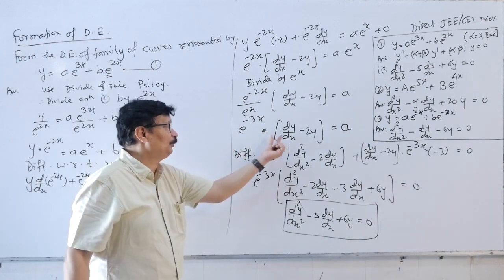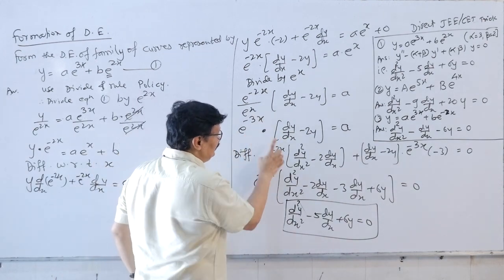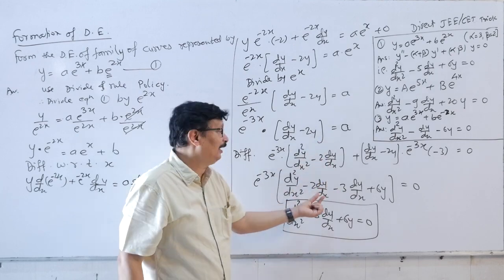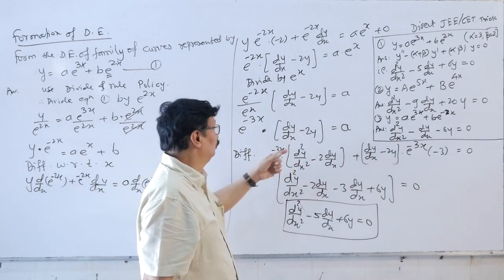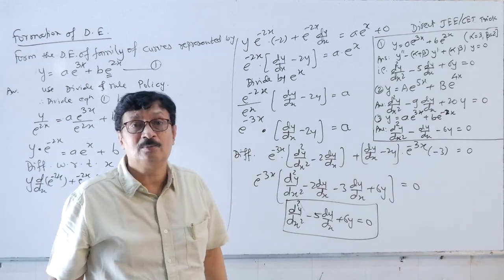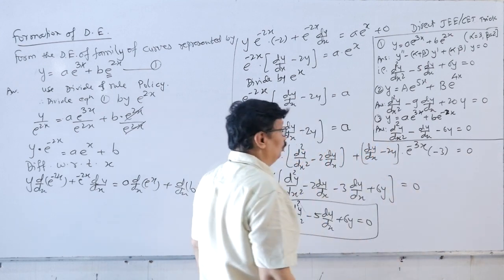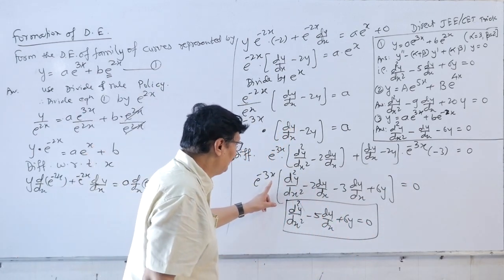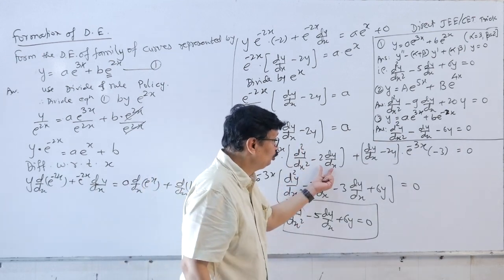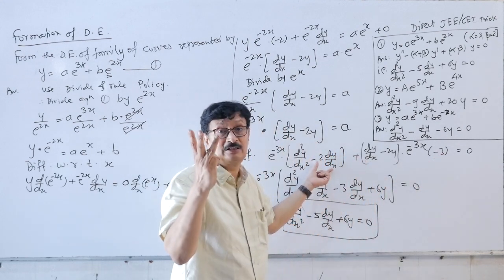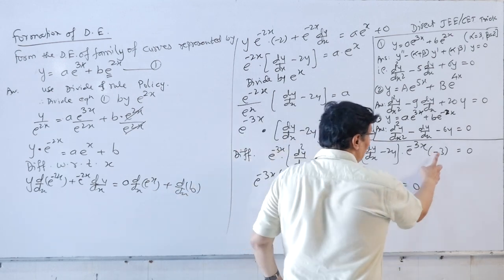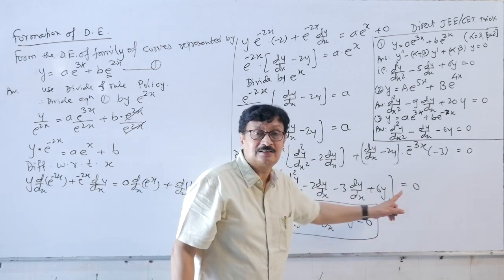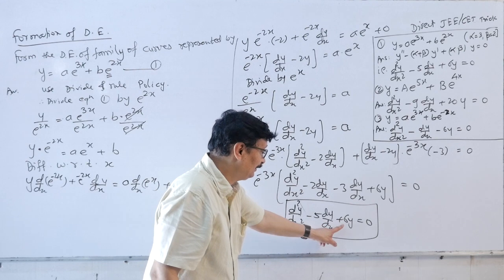Differentiating e^(−3x)·[dy/dx − 2y] = a with respect to x using the product rule: e^(−3x)·[d²y/dx² − 2·(dy/dx)] + (dy/dx − 2y)·e^(−3x)·(−3) = 0. After simplification and cancelling e^(−3x), the answer is d²y/dx² − 5·(dy/dx) + 6y = 0.